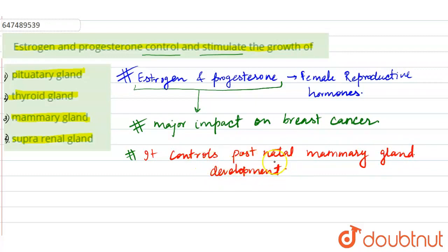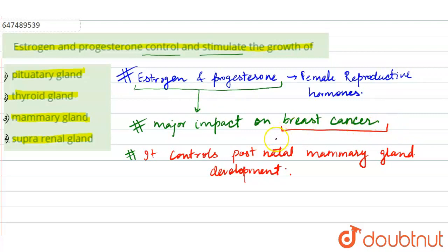यह क्या करती है — यह postnatal mammary gland development को control करके रखती है. अगर estrogen का level high होगा या कम होगा, तो बहुत ज़्यादा chances होते हैं breast cancer के development होने के. क्योंकि यह mammary gland जो होती है, वो actually related to breast होती है — this is for milk secretion, milk का secretion के काम आती है.